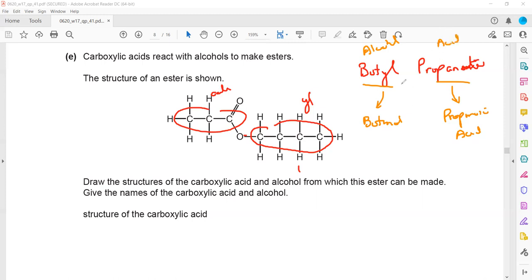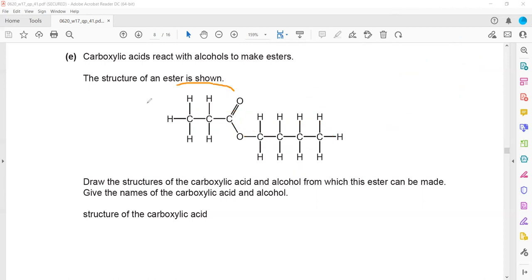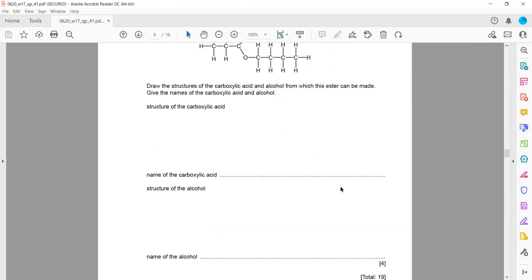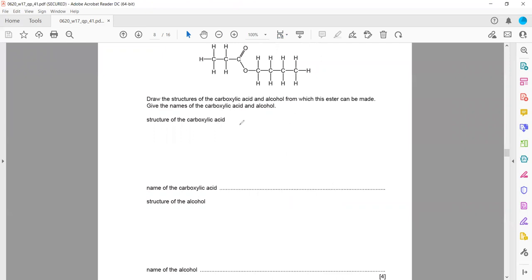We have to draw the structure of carboxylic acid. This part is from carboxylic acid and this part is from alcohol. Propanoic acid and butanol. Propanoic acid: one, two, three, then C double bonded with O and OH. Show all the bonds and all the atoms. The name of acid is propanoic acid.